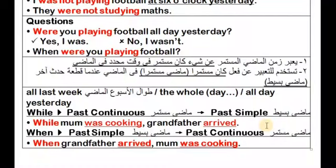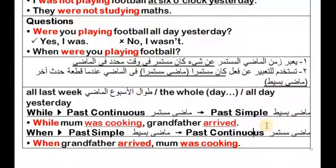While mom was cooking, grandfather was reading the newspaper — جدي كان يقرأ الجرنان، هنا كانت واحدة بتطبخ وواحدة بتقرأ الجرنان، مفيش تقاطع بينهم. لكن لو كان الحدث مستمر فجأة حاجة قطعته: while I was studying English, the light went out — النور اطفأ. الحدث التاني ماضي بسيط، والأول ماضي مستمر.